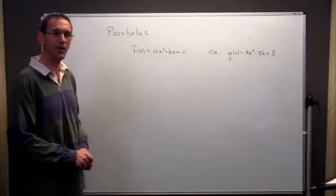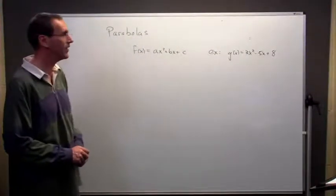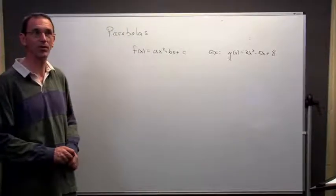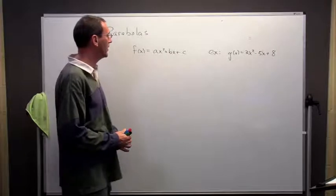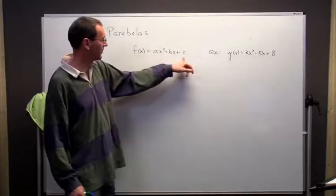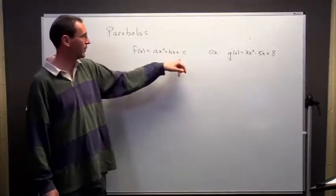Alright, we're going to look at a special case of a type of function. In particular, we're going to look at something called a parabola. Basically, this is a polynomial, but the degree is order 2. So the idea is we start off with something that looks like this: ax squared plus bx plus c.